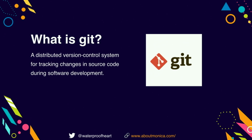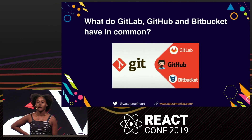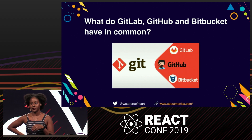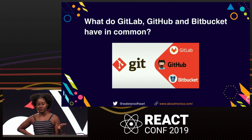So first, what is Git? Git is an essential part of this talk — it's a distributed version control system. A lot of developers may be familiar with using Git to manage their version control, and usually you can use it locally on your computer. So what do GitLab, GitHub, and Bitbucket have in common? These are all remote hosting places where you can store your Git repositories, and they build collaborative tools on top of Git.